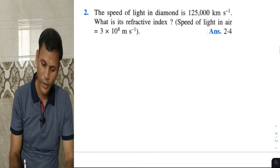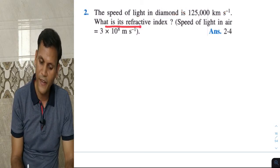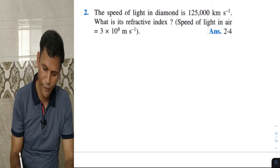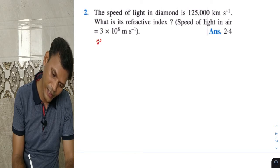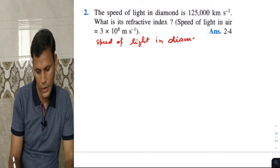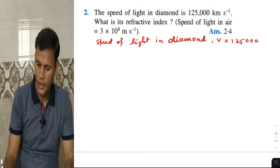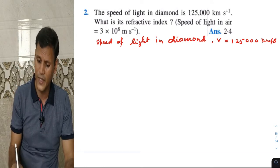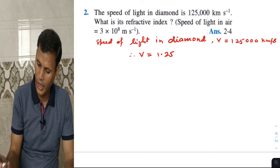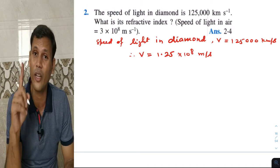Question number 2: the speed of light in diamond is given. We have to find the refractive index mu. The speed of light in diamond is 1,25,000 kilometers per second. We need to convert it to meter per second. So v equals 1.25 into 10 raise to 8 meter per second, since 1 kilometer equals 1000 meters, i.e., 10 raise to 3.